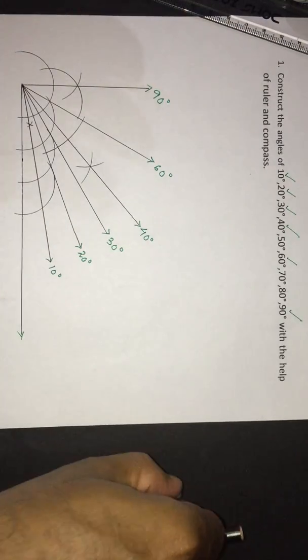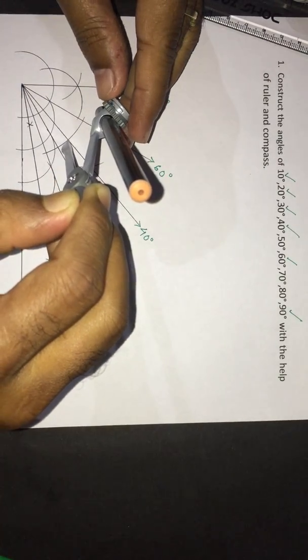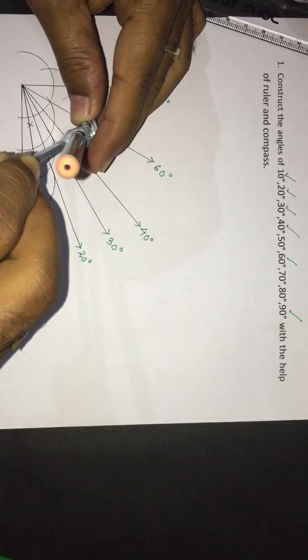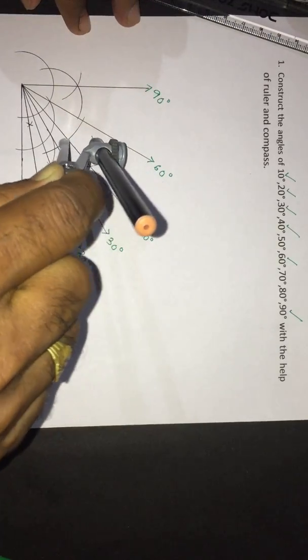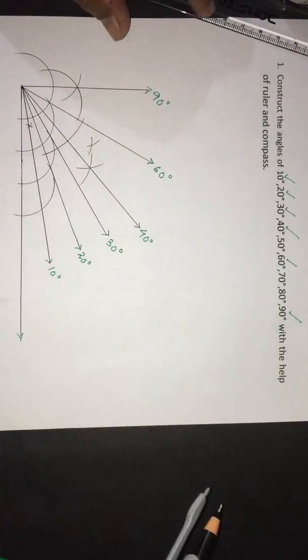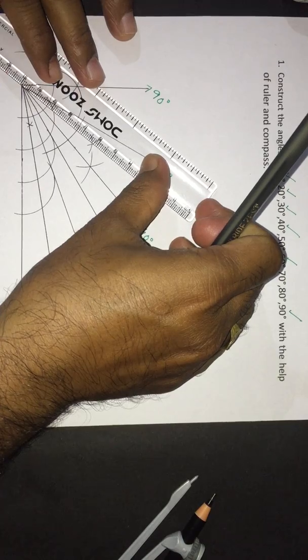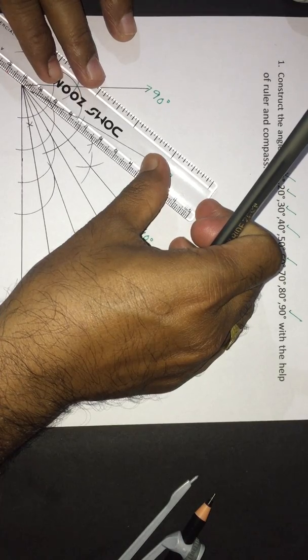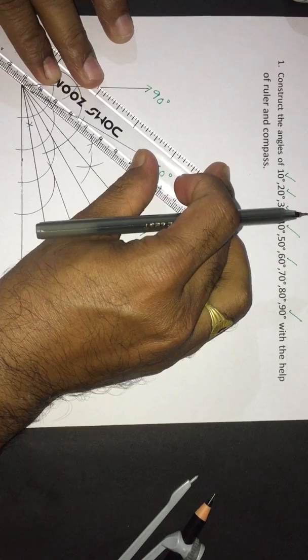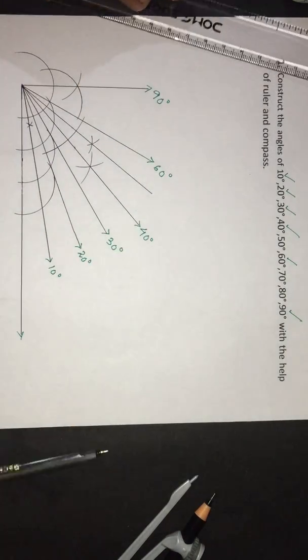Again, if we divide the angles between 40 and 60 degrees — that is half of 20 degrees, which is 10 degrees — we will ultimately get 50 degrees. We can see here this gives us the value, that is the angle 50 degrees.